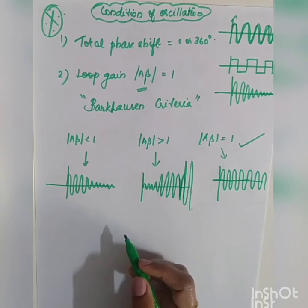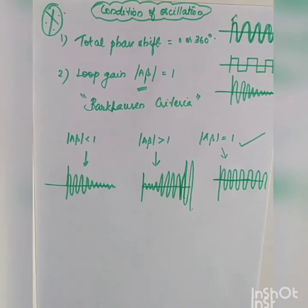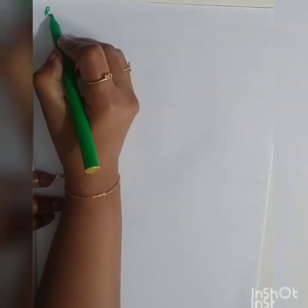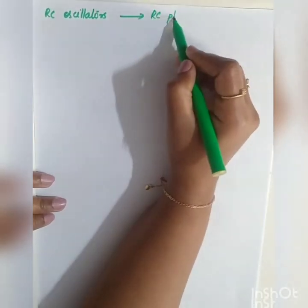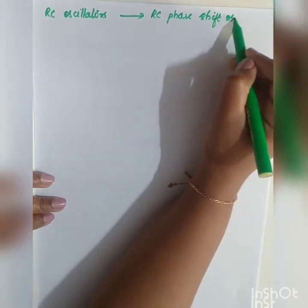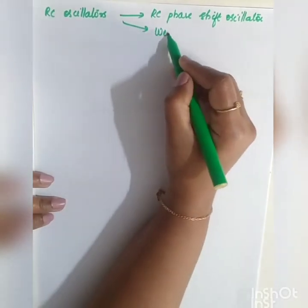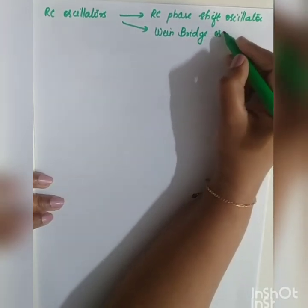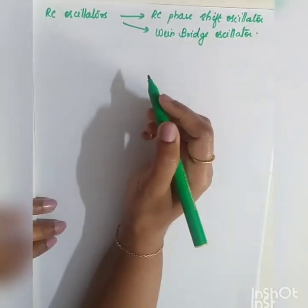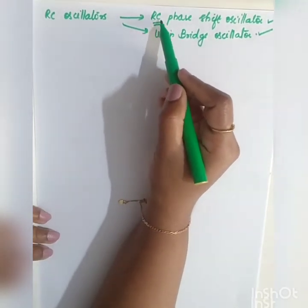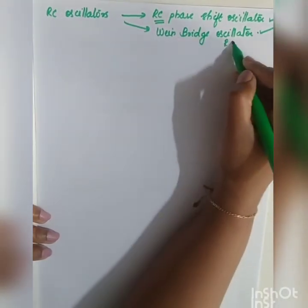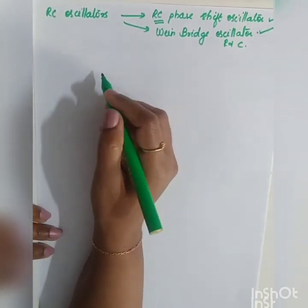Based on the components used — resistors, capacitors, or inductors — oscillators are classified into different types. As per the syllabus, two types of RC oscillators are studied: first, the ladder network or RC phase shift oscillator, and second, the Wien bridge oscillator. Both types use resistors and capacitors as components.